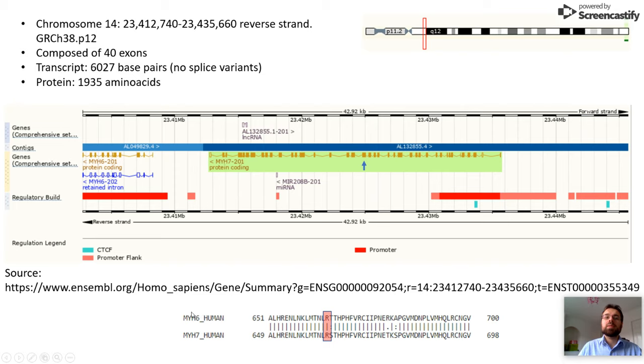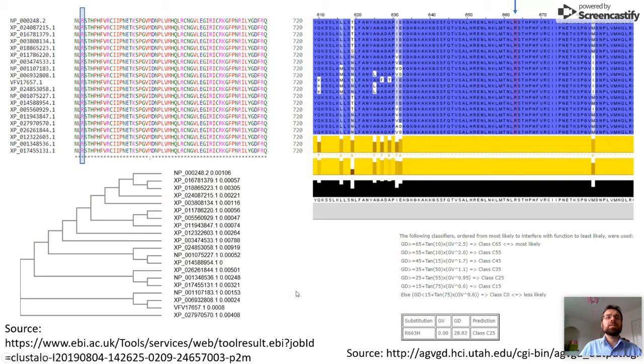MYH6, which is the alpha myosin, alpha cardiomyosin, which is the primary myosin expressed in the heart, when aligned with MYH7 shows the conservation of this arginine residue. If we look at the MYH7, beta myosin only across several vertebrates, we can see that in all cases this residue is highly conserved.